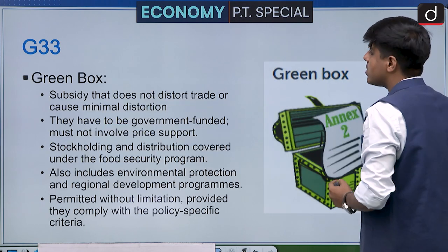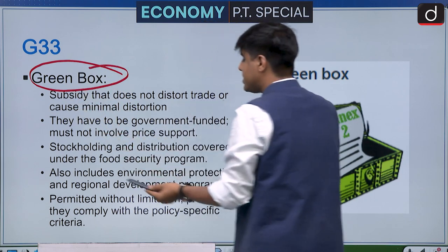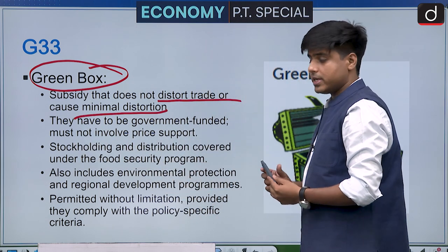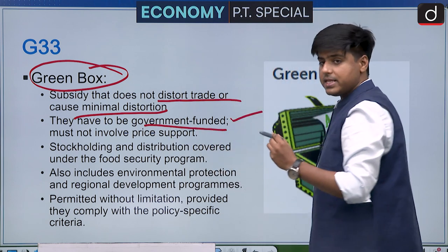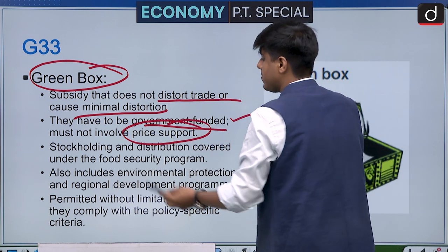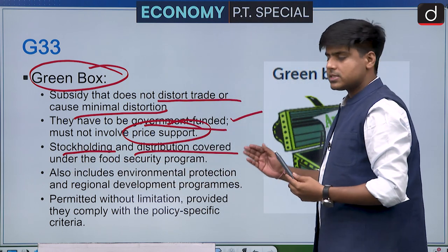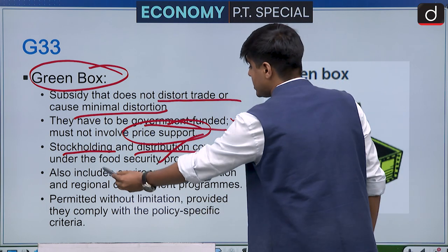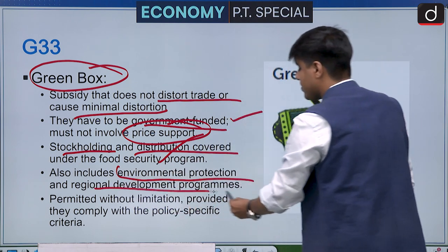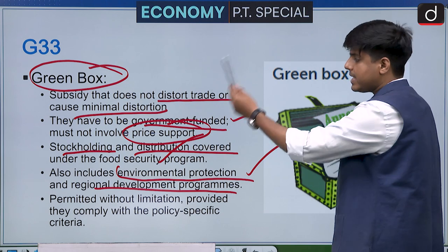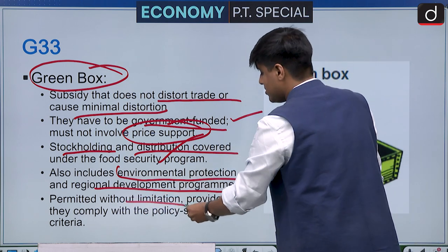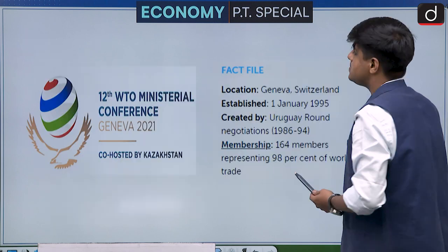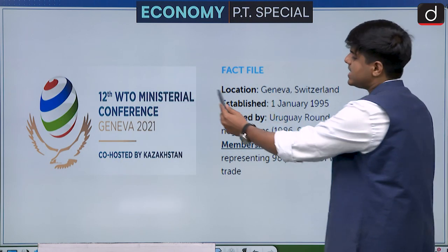The Green Box includes measures that do not distort trade or cause minimal distortion. They must be government-funded and must not involve price support. Stock holding, distribution, and food security measures are covered under the Green Box. It also includes environmental protection and regional development programs. Like the Blue Box, these are permitted without limitation, provided they comply with the specified policy criteria.